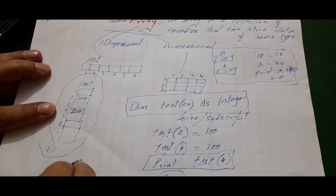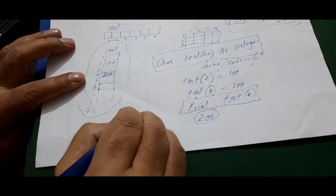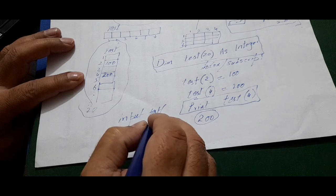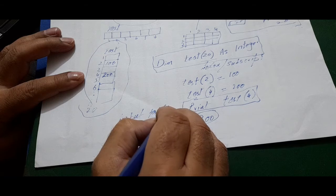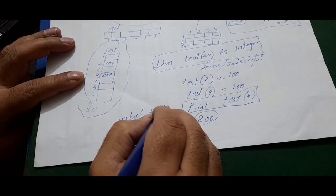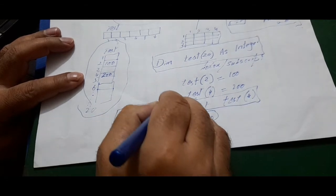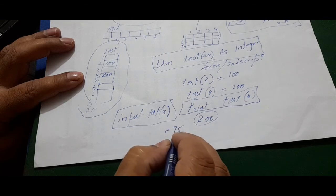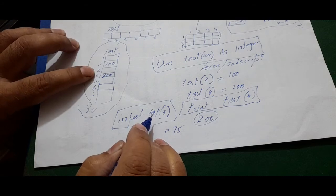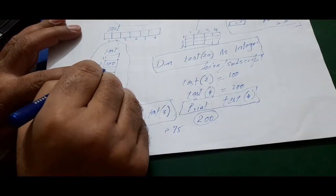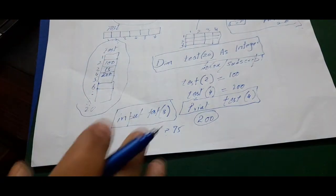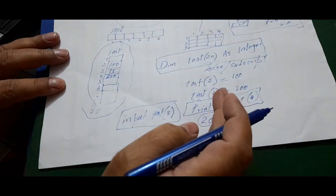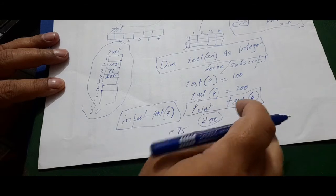Same is the case with input. If we want to take input from the user, we write 'input test(3)'. When we run the program, a question mark appears. When the user types a number — for example, 75 — that number will be stored in the third location of the array 'test'. This is how we can store, display, and input values in a single-dimensional array.